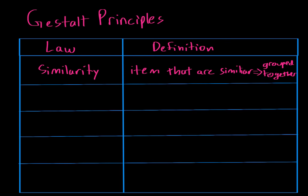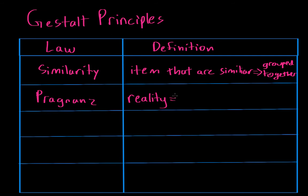The second Gestalt Principle is the law of Prägnanz. This basically says that reality is often organized or reduced to the simplest form possible. So reality is reduced to its simplest form. What does that mean? Let's look at an example.